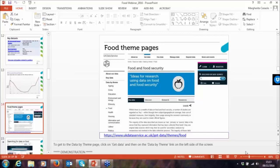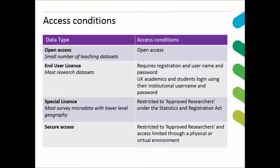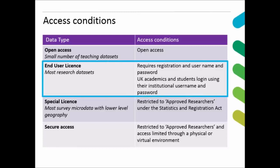Now I'd like to briefly talk about accessing and downloading the data before I hand over to Rebecca. Access to data can come with different forms of licence and access conditions — the different access arrangements reflect the risk of potential disclosure. All the data are anonymised, but if you had detailed information about a person's job, which sector they work in, the area they live in, as well as their age and gender, there is a danger that in some cases you could identify who that person is. However, most of our data is under end user licence.